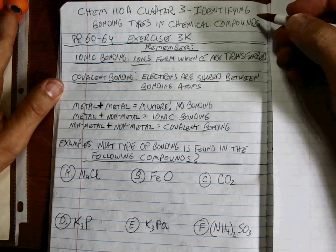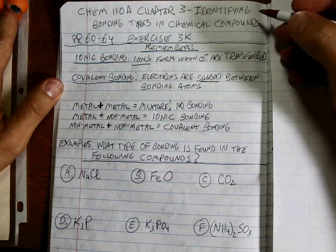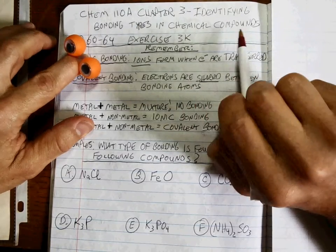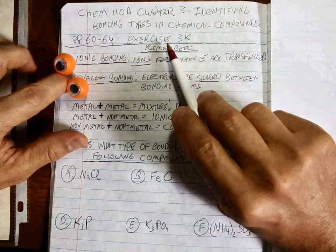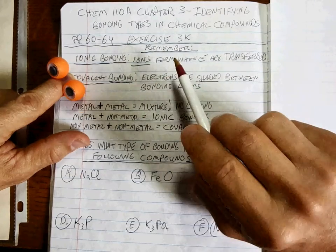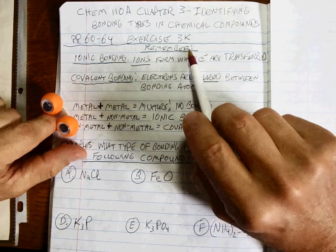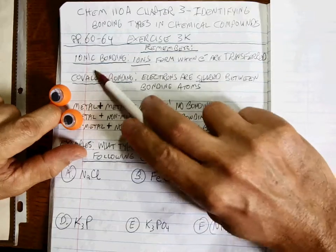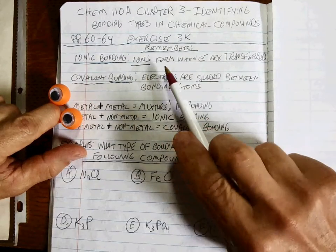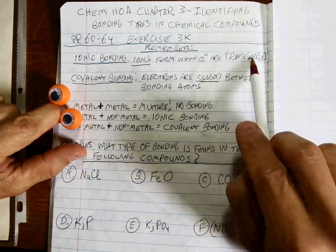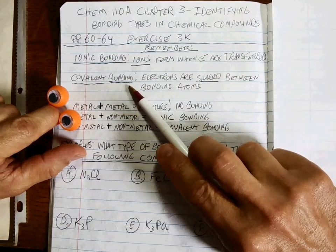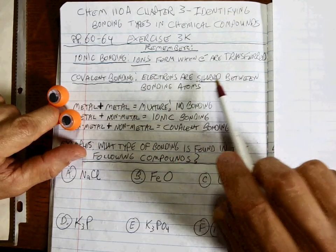The last part of chapter three is identifying bonding types in chemical compounds. This is exercise 3K, page 60 through 64. The key things to remember are that ionic bonding has ions form when electrons are transferred, and covalent bonding — the electrons are shared between the bonding atoms.